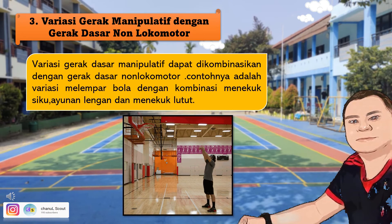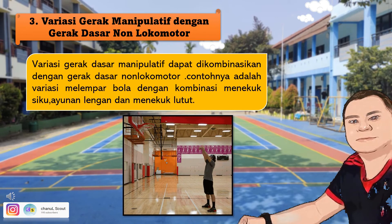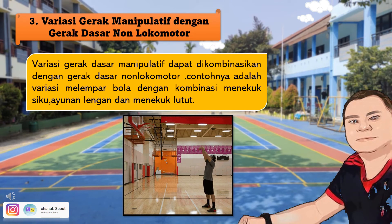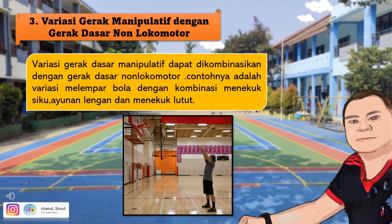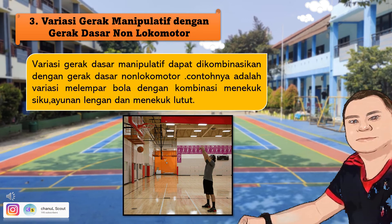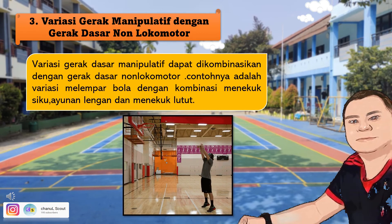Selanjutnya yang ketiga: variasi gerak manipulatif dengan gerak dasar non-lokomotor. Variasi gerak dasar manipulatif dapat dikombinasikan dengan gerak dasar non-lokomotor. Contohnya adalah variasi melempar bola dengan kombinasi menekuk siku, ayunan lengan, dan menekuk lutut untuk melempar bola ke keranjang basket atau mengumpan. Sebelum melempar, menekuk siku kemudian tangan diayunkan sebagai awalan, yang biasanya dilakukan pada gerakan jump shoot untuk melempar ke dalam keranjang.